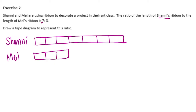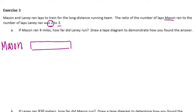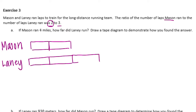There's the tape diagram representing the ratio. Exercise three: Mason and Laney ran laps to train for the long distance running team. The ratio of the number of laps Mason ran to the number of laps Laney ran was two to three. If Mason ran four miles, how far did Laney run? Draw a tape diagram. Mason is first, so his is two.